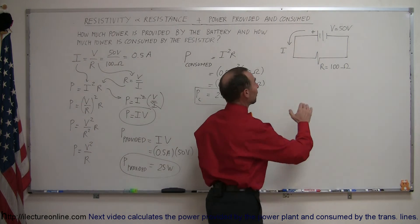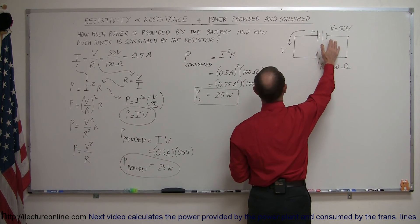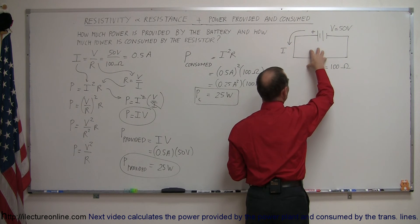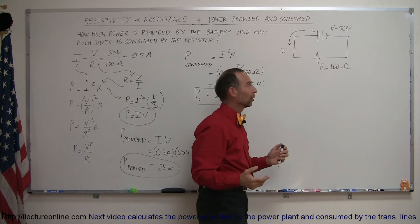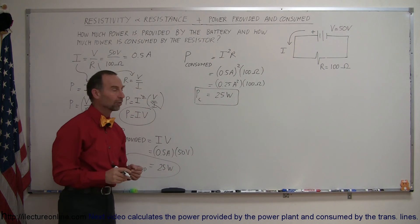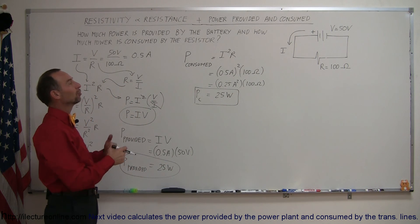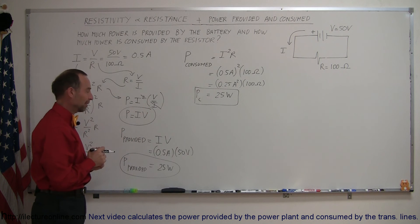Which means that the battery produces 25 watts of power to the circuit, and the resistor in the circuit consumes all of it, so none of it is returned to the battery. So the resistor in this case is a complete consumer of the power provided by the battery.